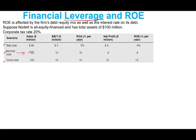Starting with the normal year: sales is a million, EBIT is 10 million. Return on asset is EBIT of 10 divided by 100 million of assets, which is 10%. Net profit is 8 million. Return on equity is net income of 8 million divided by 100 million, which is 8%.